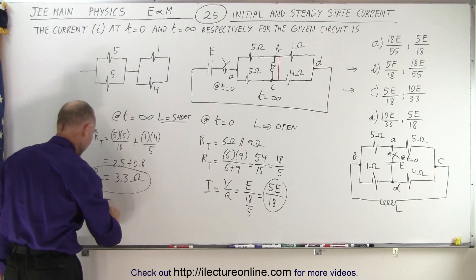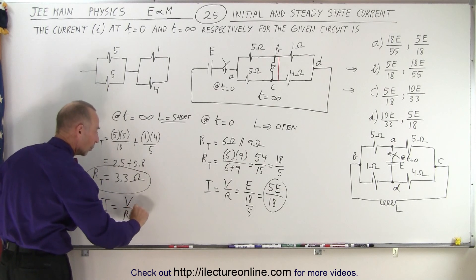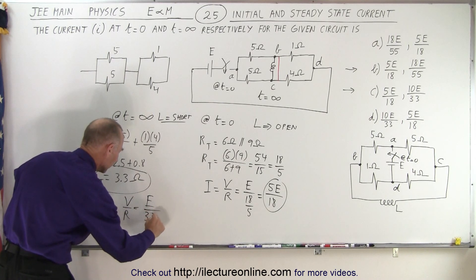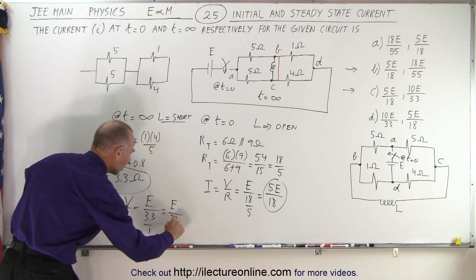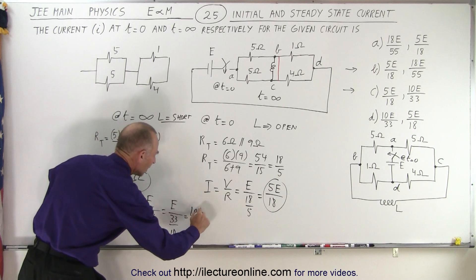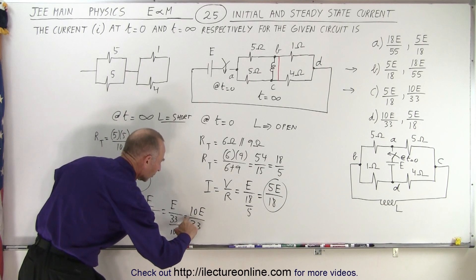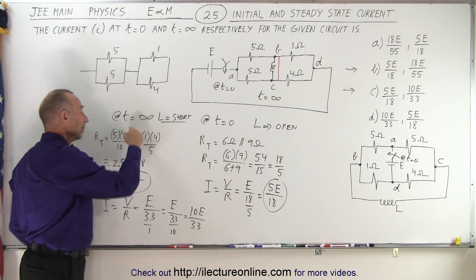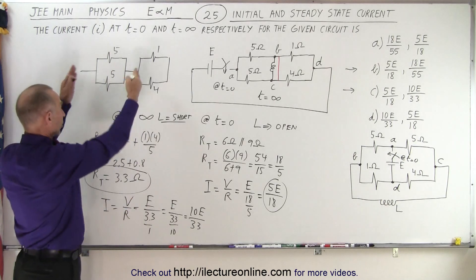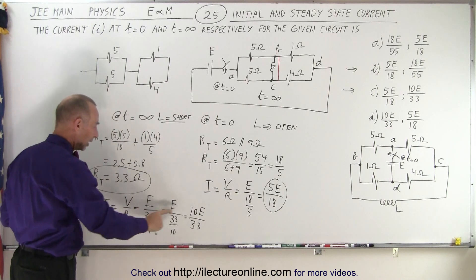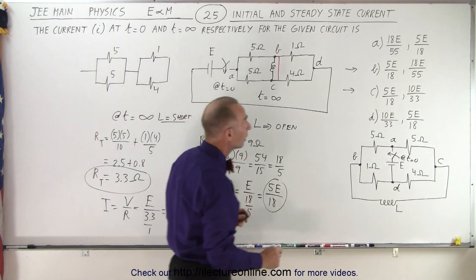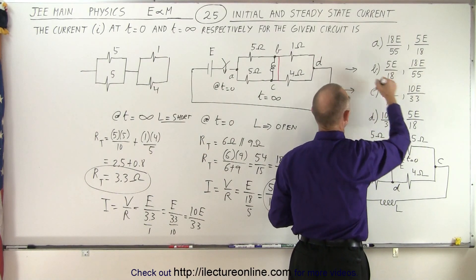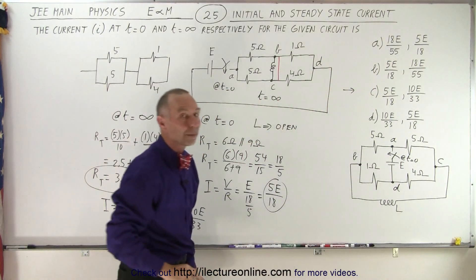Now again, I equals V over R, which is equal to E divided by 3.3 over 1, which is the same as E divided by 33 over 10, which is equal to 10E divided by 33. If you want to get rid of the decimal point, there we go. So now we look for the second answer. When time is at infinity, essentially we've reached steady state. Our circuit becomes like this. The resistance total now is this. The current calculated can be said as to be 10E over 33, which means this is the answer for the current when we're at steady state. So this is no longer true. The answer to the problem equals C.